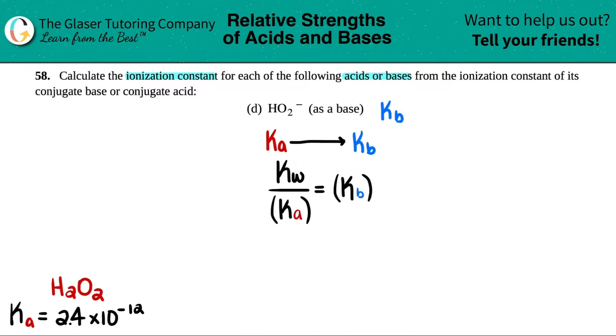Okay. So we're solving for Kb. We have the Ka. That was from the conjugate acid, 2.4 times 10 to the negative 12th. Now, since we're pulling this from the back of a textbook, the Kw value is probably going to have to be memorized. Your teacher or professor might not give you the Kw value, but that's going to be 1.0 times 10 to the negative 14th. That's the ionization constant for water.